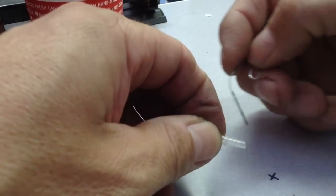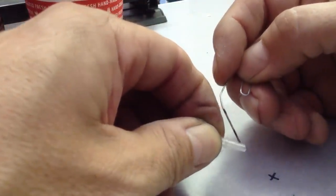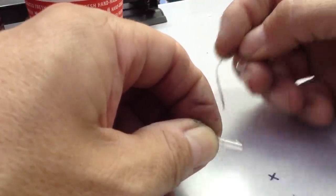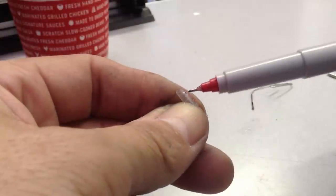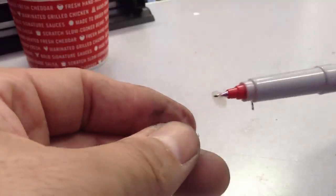Again, using the hot knife, we're going to poke a little hole in that second piece of the ink cartridge. That hole should be just big enough to put our pen through.